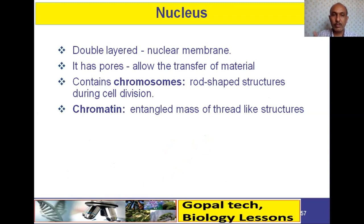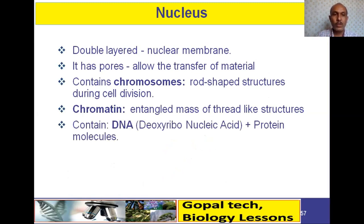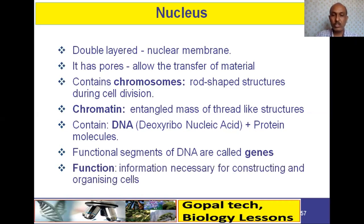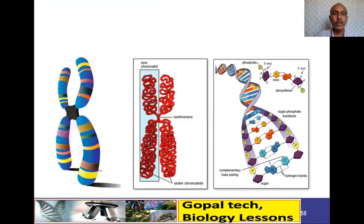Chromatin is an entangled mass of thread-like structures that become chromosomes during cell division. Chromosomes and chromatin chemically contain DNA — deoxyribonucleic acid — and protein molecules. DNA contains functional segments called genes, and every gene carries information necessary for constructing and organizing cells and the functions of our body.